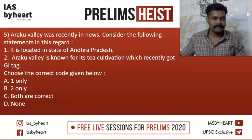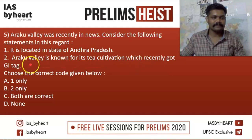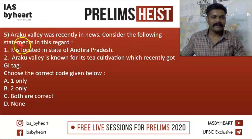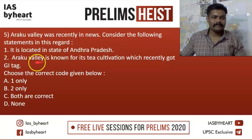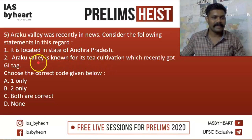Next question: Araku Valley was recently in news. Consider the following statements: (1) It is located in the state of Andhra Pradesh. (2) Araku Valley is known for its tea cultivation, which recently received a GI tag. We all know that Araku Valley is located in Andhra Pradesh, so statement 1 is correct. However, statement 2 is wrong because Araku Valley is known for its coffee plantation, not tea. By eliminating statement 2, our answer is A — only the first statement is correct.